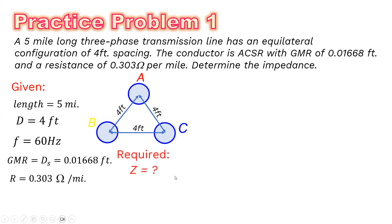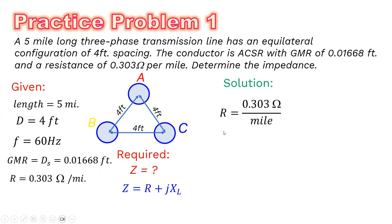We are asked to solve for the impedance, which equals R + jX_L (resistance plus inductive reactance). Solving for resistance first: since the given value is 0.303 ohms per mile, we multiply by the length of 5 miles, giving a resistance of 1.52 ohms.